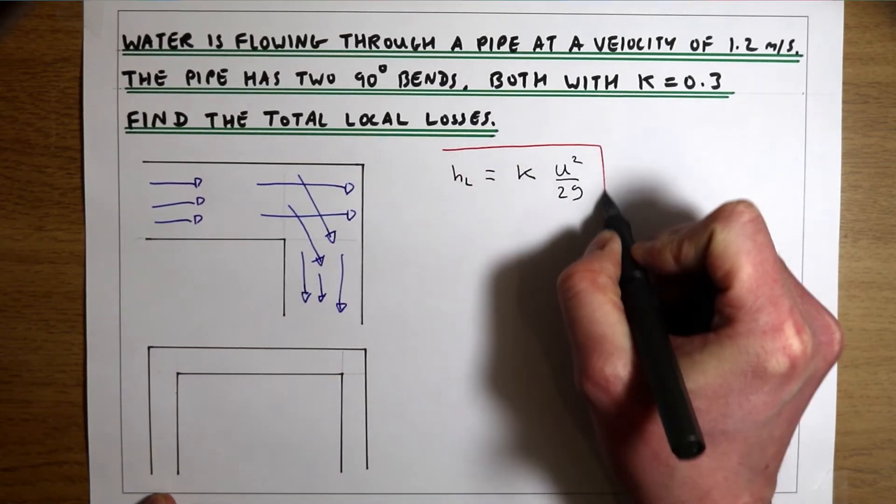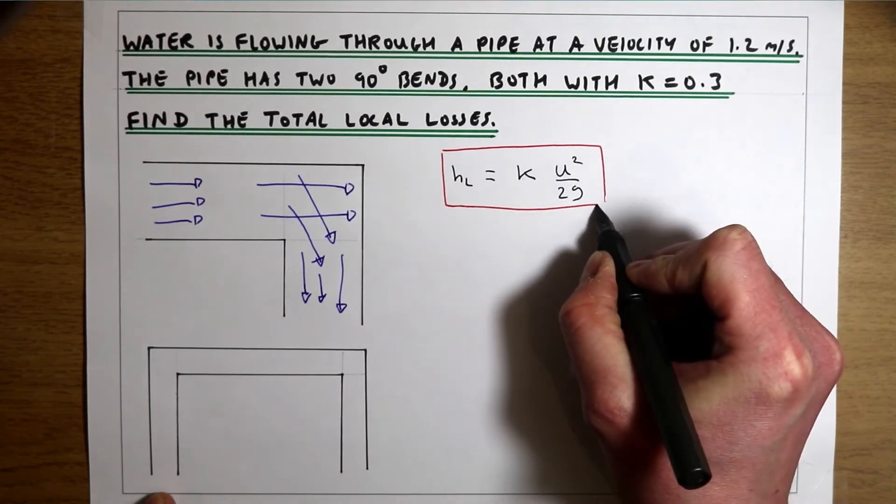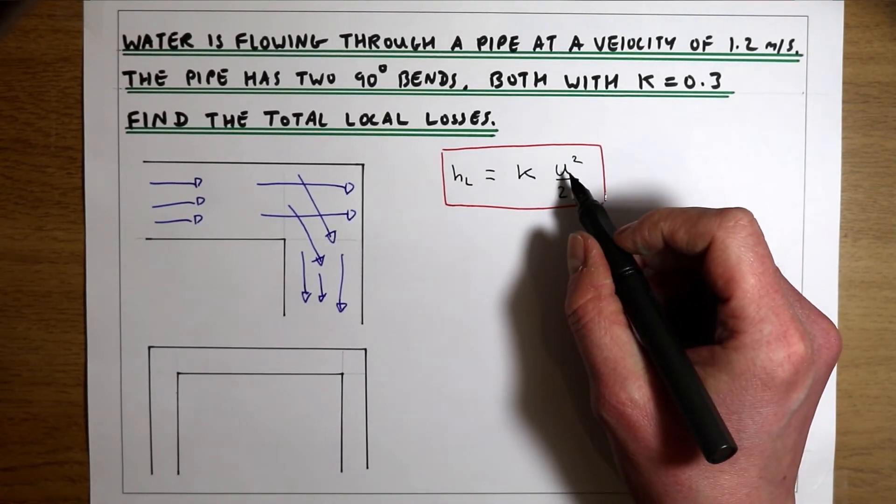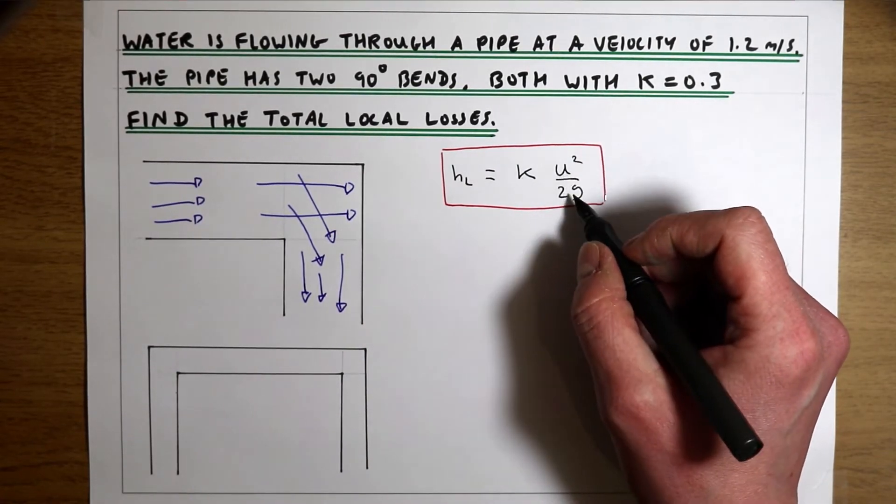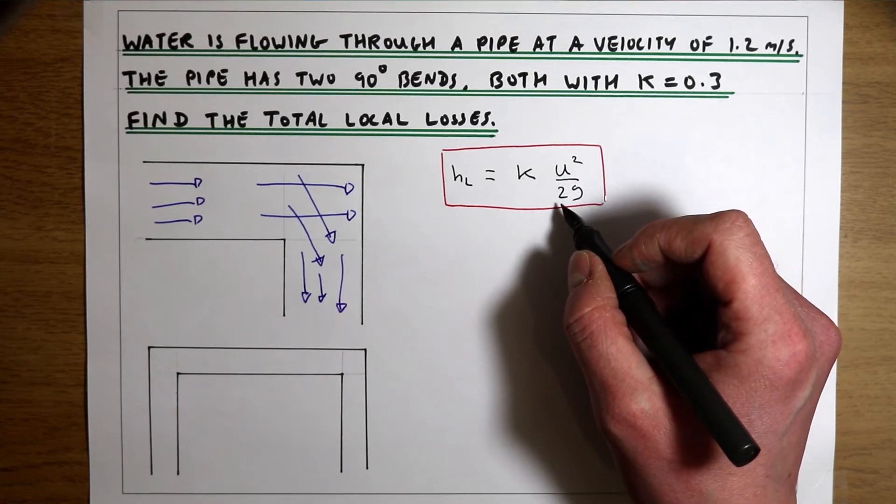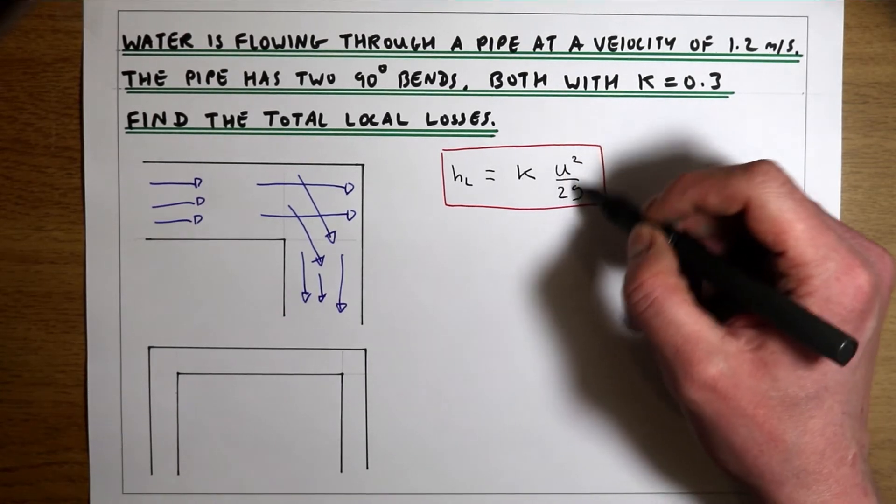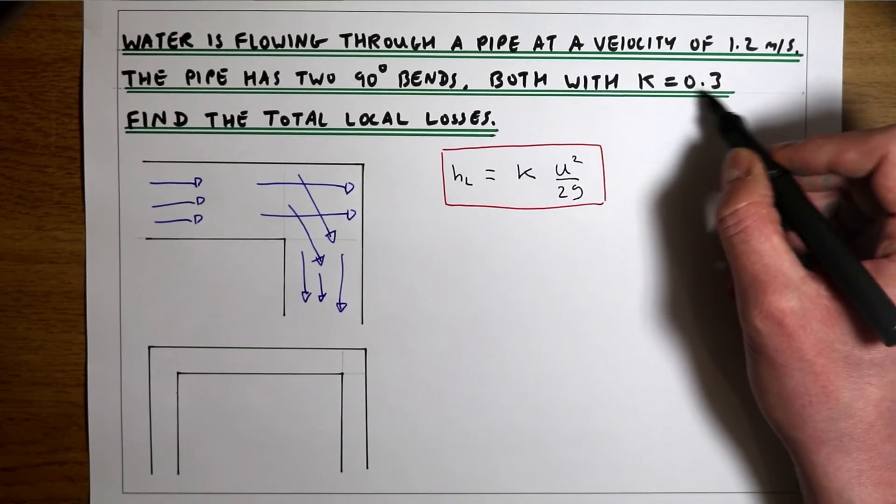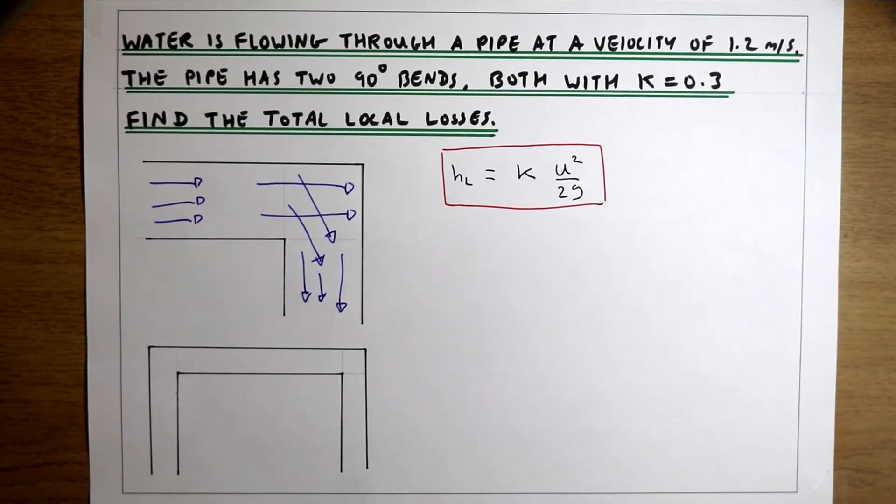So a nice small equation where all we're doing is multiplying the velocity squared over 2g, so the kinetic energy head, by a local loss coefficient, which we're given in the question.